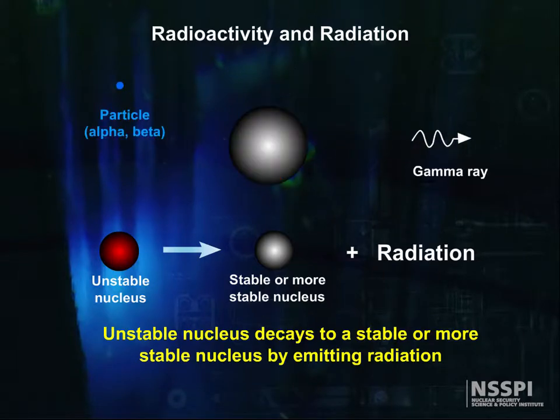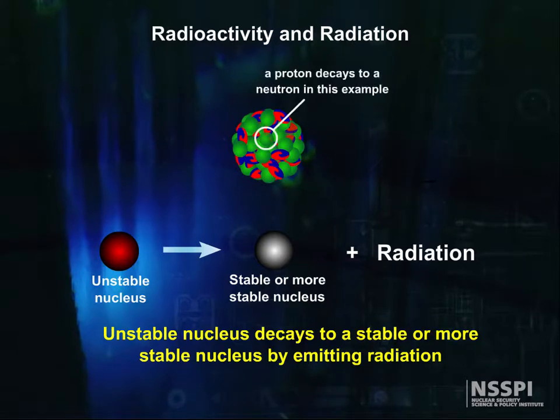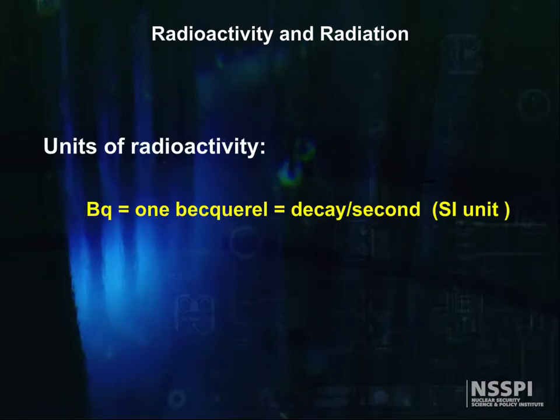What unit do we use to describe the amount of radioactivity? The modern SI unit is one decay per second, or one becquerel, abbreviated BQ.